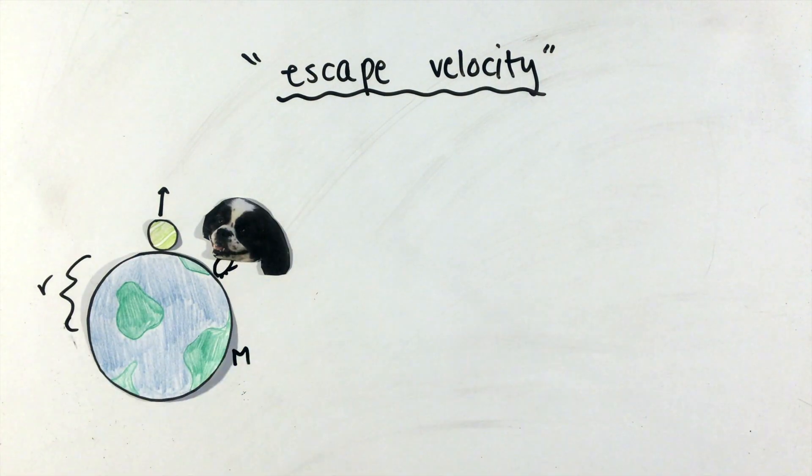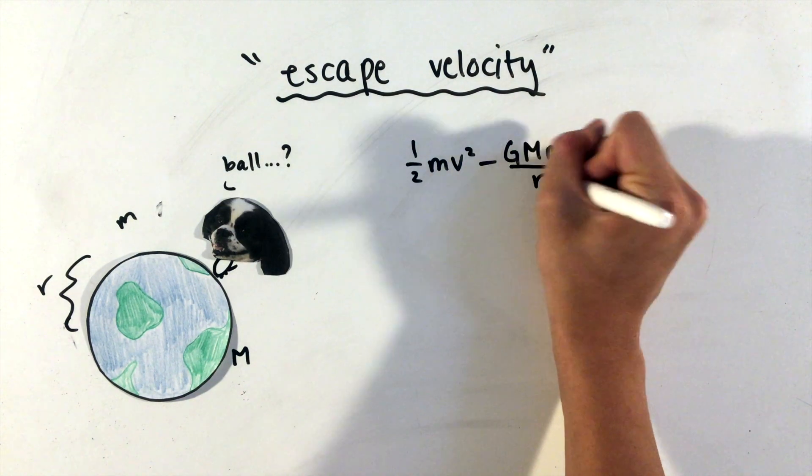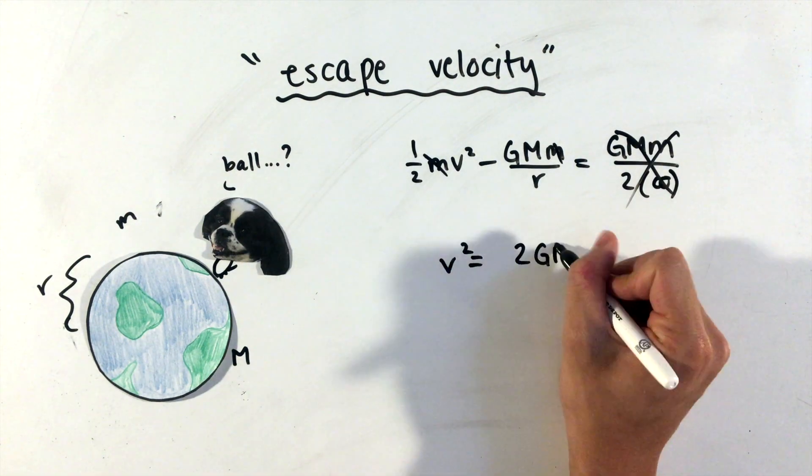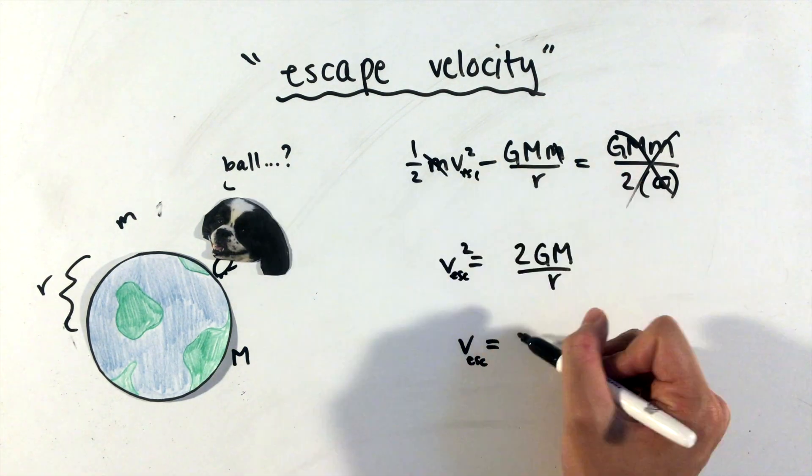Say, the velocity needed to throw this ball for it to never fall back down to Earth. This would occur when our semi-major axis of orbit is essentially infinity, making the total energy zero. Rearranging, the escape velocity equation is shown here.